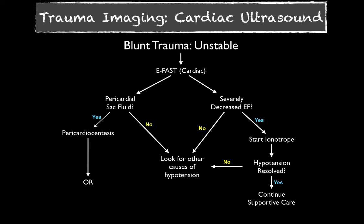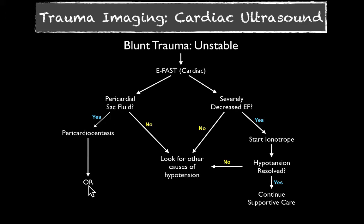A FAST exam looks at the heart, lungs, and abdomen. We're going to talk strictly about unstable, hypotensive, or significantly tachycardic patients, as there's limited utility in normotensive patients. In young patients, tachycardia could be the first finding of shock, so have a low threshold to perform this study. For the heart, our first question is: is there pericardial sac free fluid? For anyone hypotensive, look there first — it's one of the first spots to check. If yes, you need to consider pericardiocentesis or thoracotomy depending on vital signs, or they may need to go to the OR.